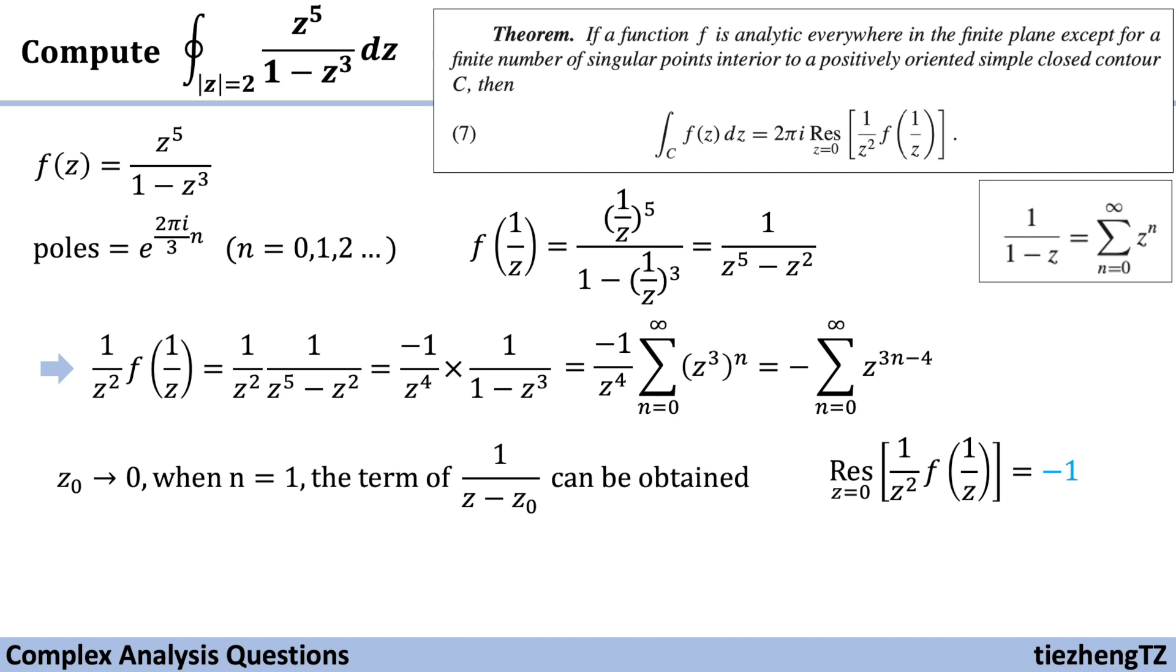And now we can say the integral of z^5 over 1 minus z^3 dz in the given range |z| = 2 is 2πi times the residue, which is -1. So the final answer is -2πi.